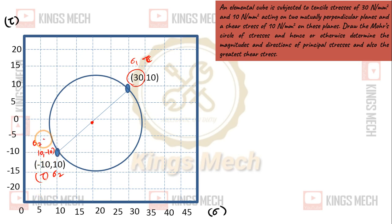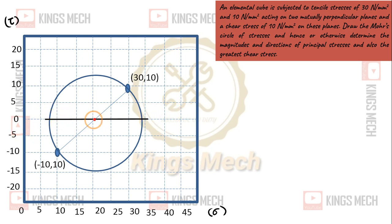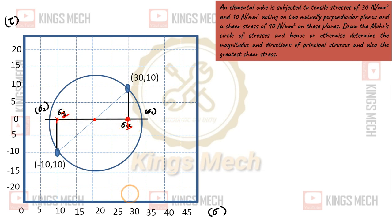This gives the sigma–tau diagram. The circle is centered on the center line. The top line and bottom line meet at the center line. So this is your sigma 1 and this is your sigma 2. The point 10,0 and 30,0 are plotted. Sigma 1 value is 30, sigma 2 value is 10.